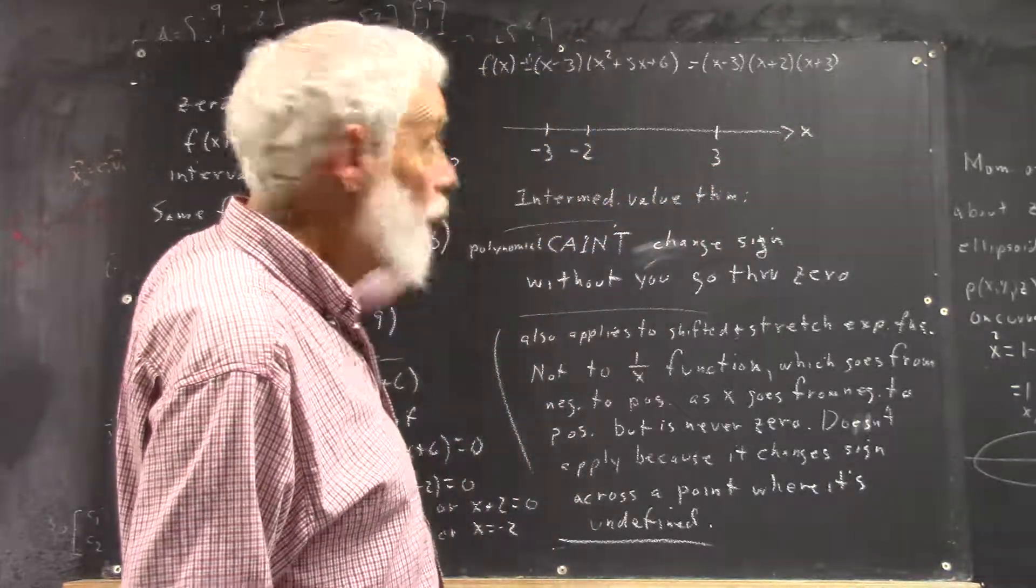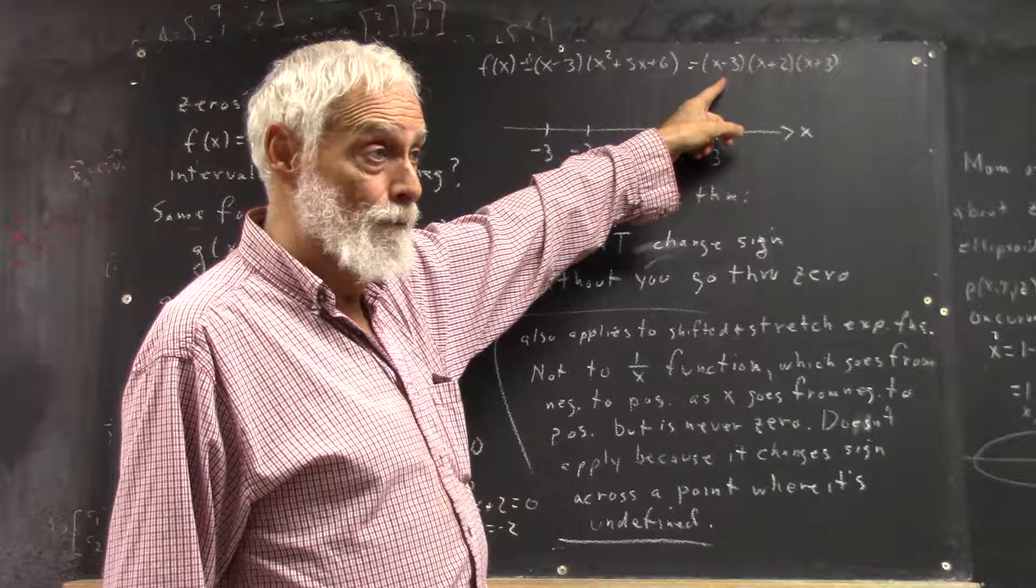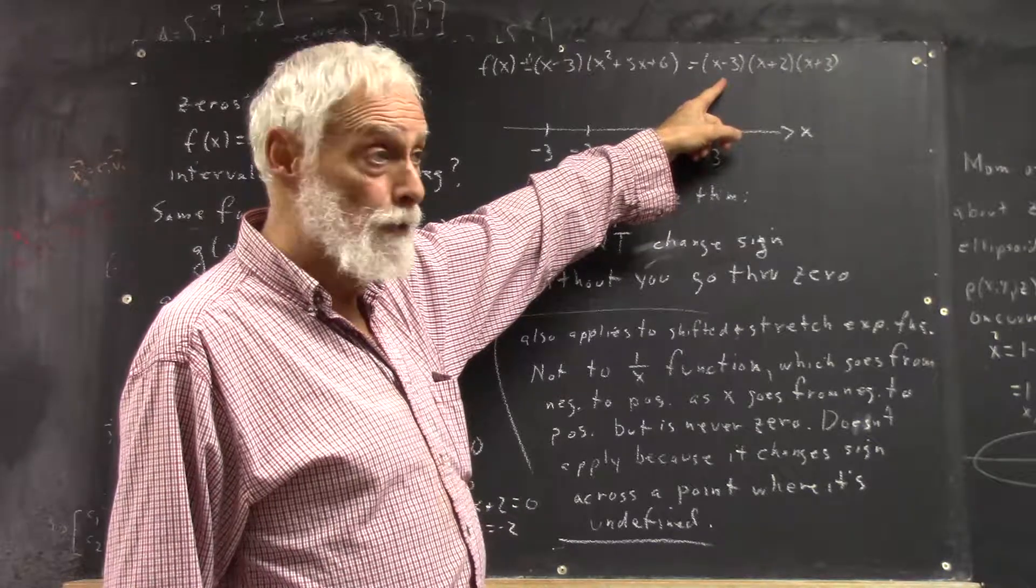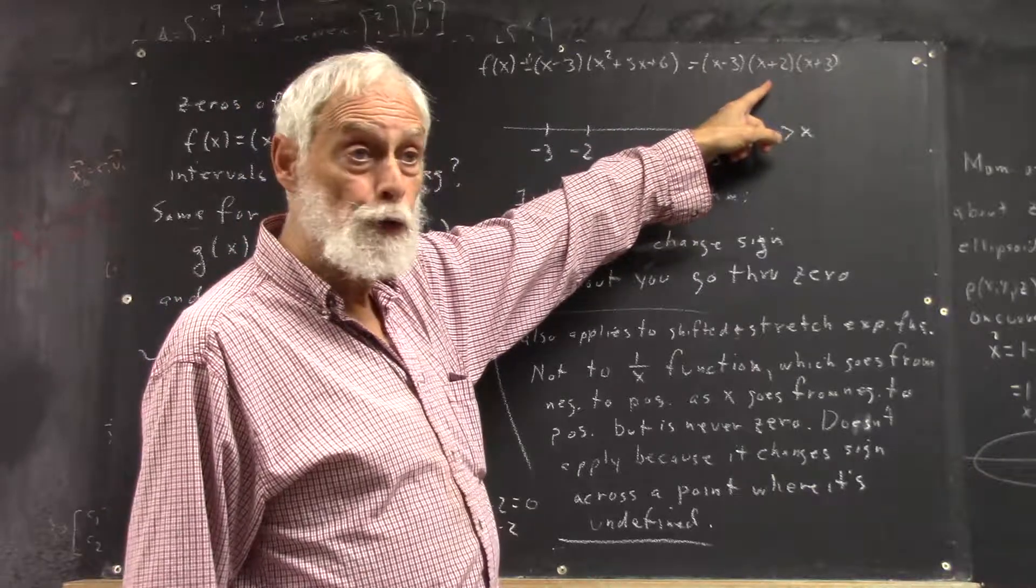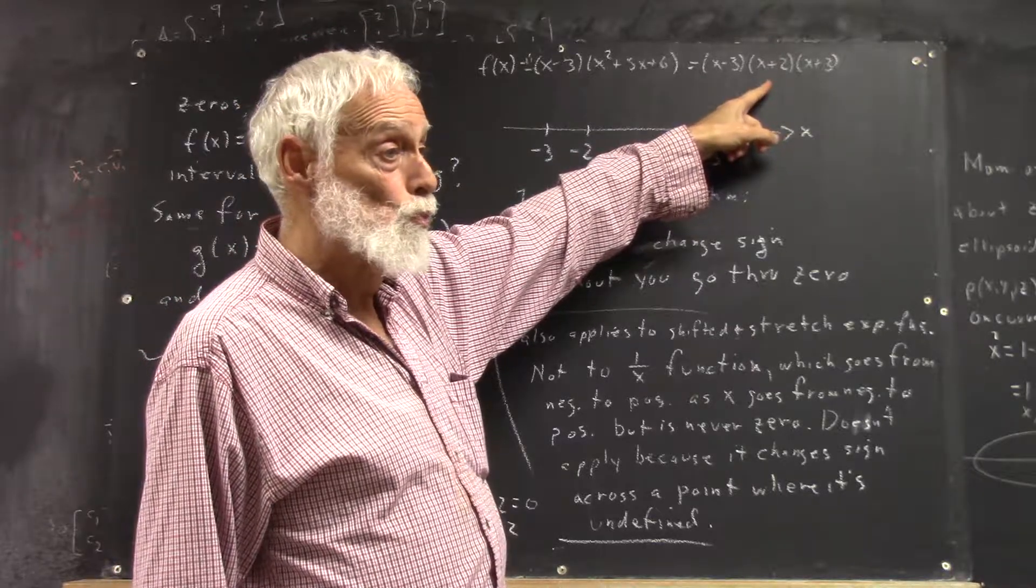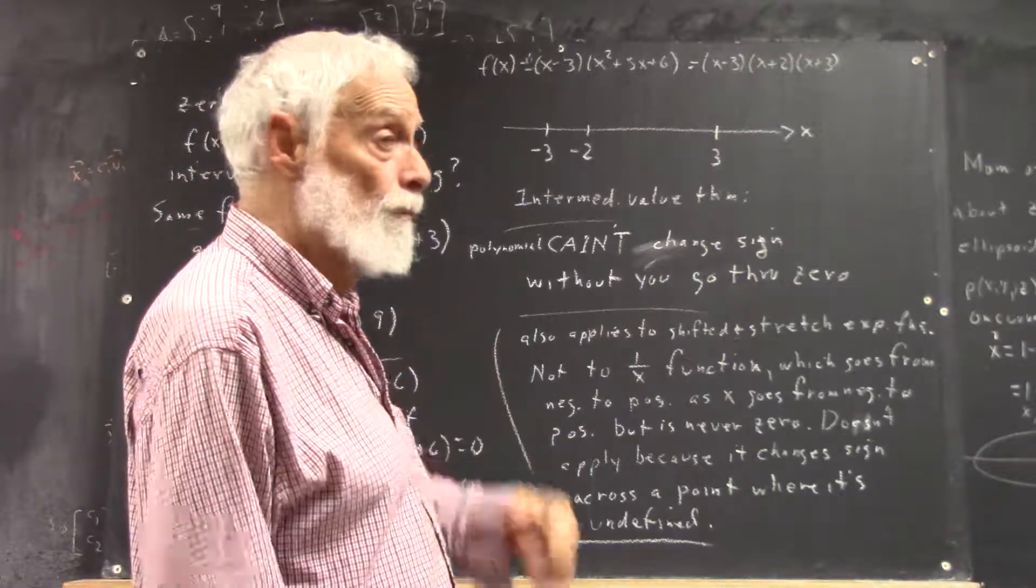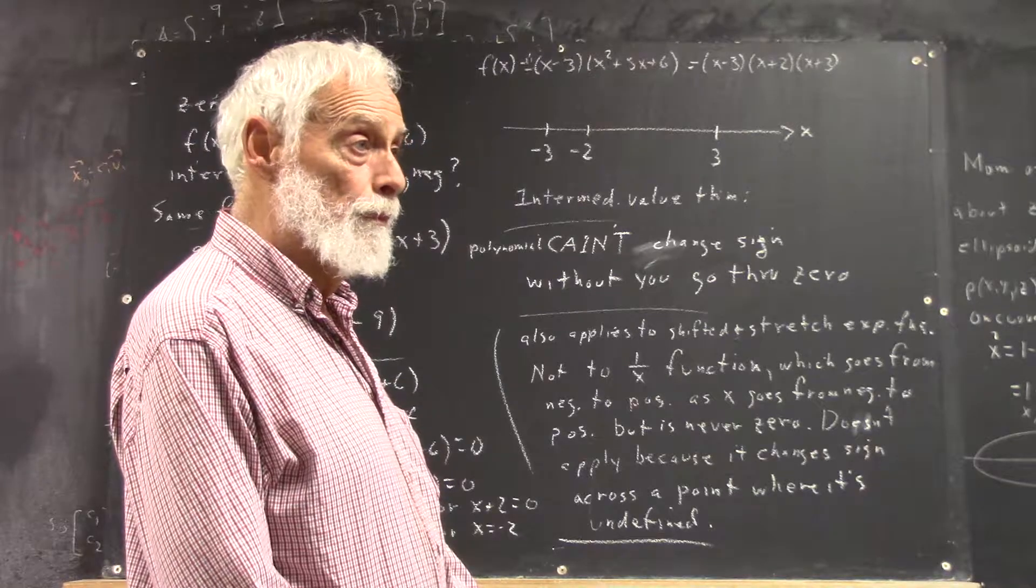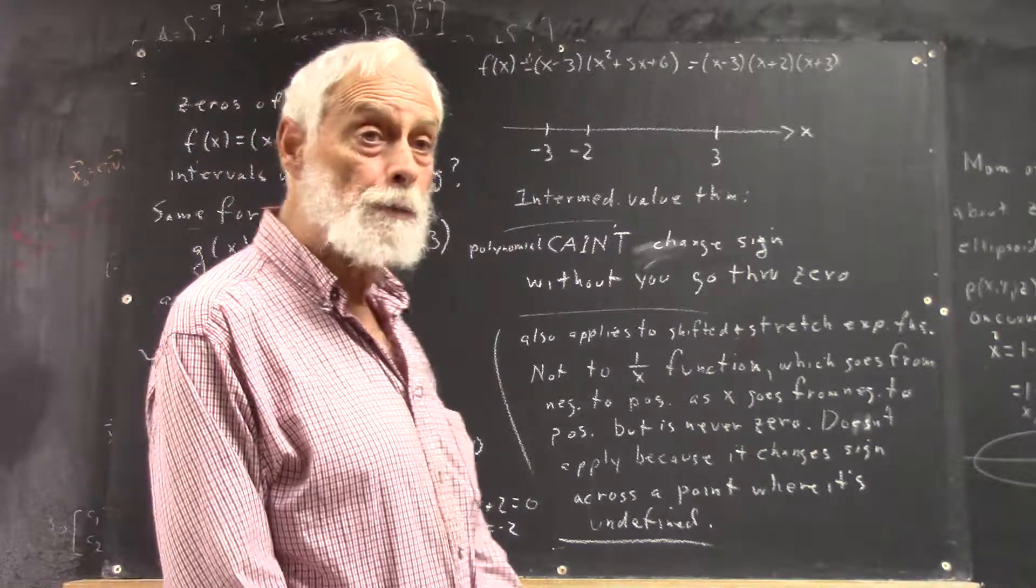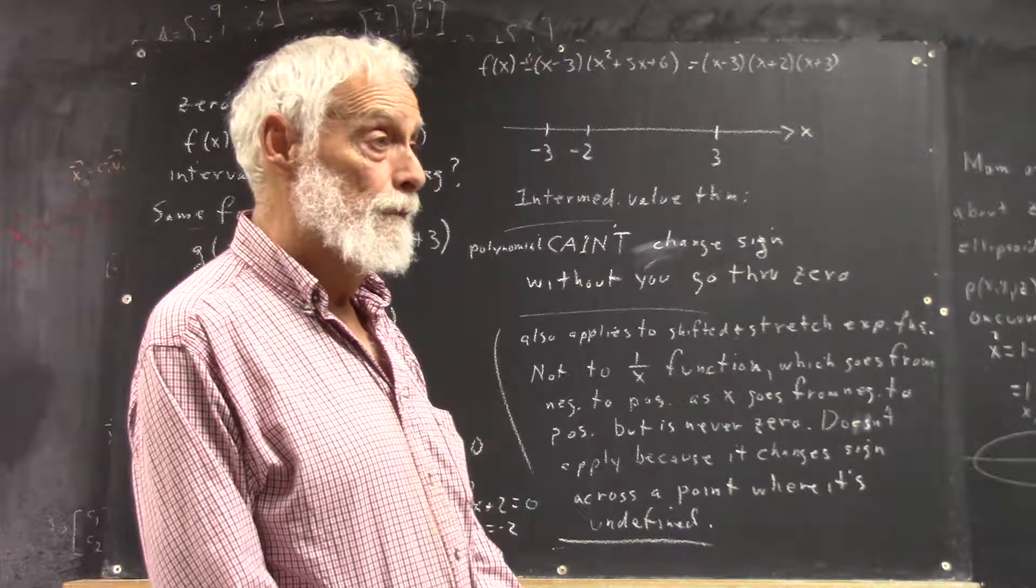If x is less than negative 3, what can you tell me about x minus 3? Is it positive or negative? It's negative, right? What can you tell me about x plus 2? x is less than negative 3. Is x plus 2 positive or negative? It's negative, right?